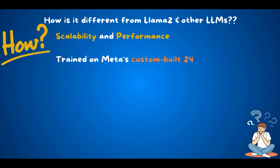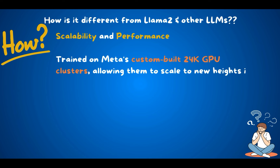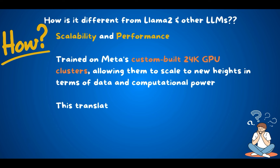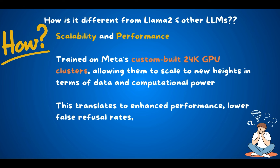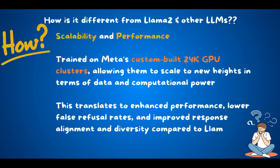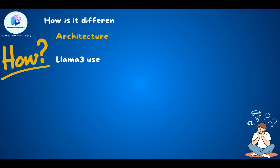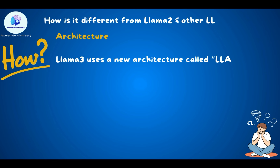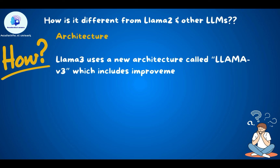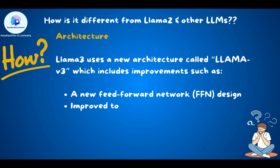Now let's look at how LAMA 3 differs from LAMA 2. In terms of scalability and performance, LAMA 3 is trained on Meta's custom-built 24k GPU clusters, allowing them to scale to new heights in data and computational power. This translates to enhanced performance, lower false refusal rates, and improved response alignment and diversity. LAMA 3 uses a new architecture that includes a new feed-forward neural network design, improved tokenization and encoding, and enhanced positional encoding.